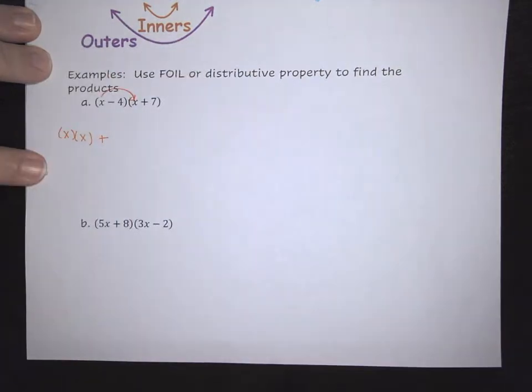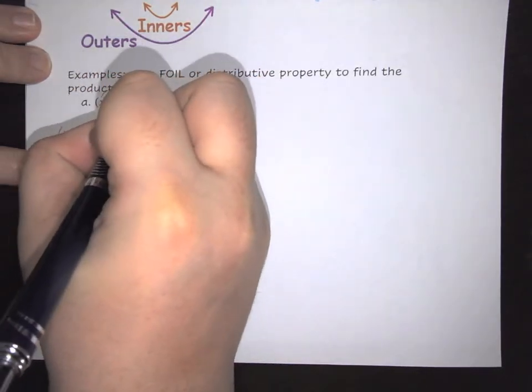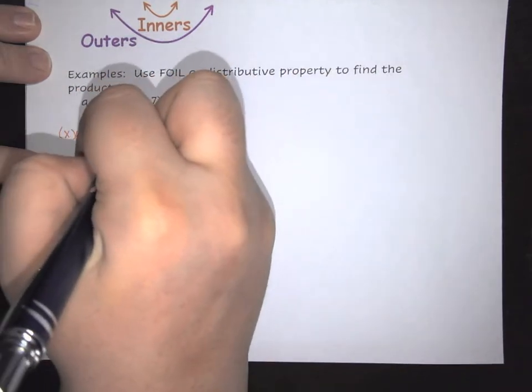Then we're going to add it to the next set. This is going to be your outermost set, these two terms. So this is going to be X times 7.